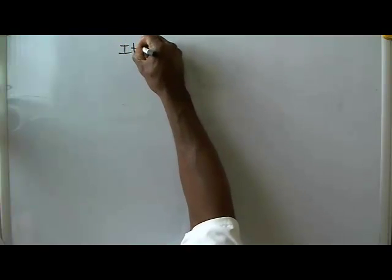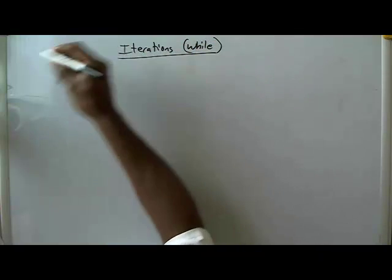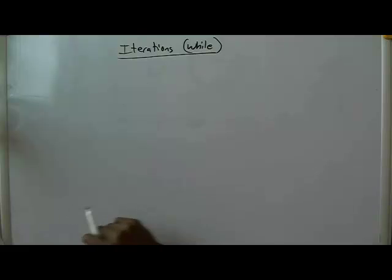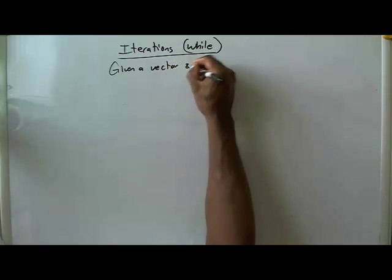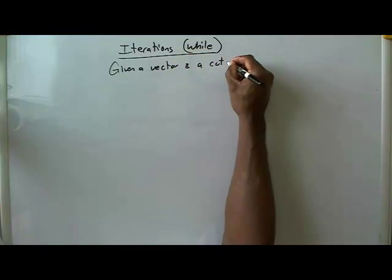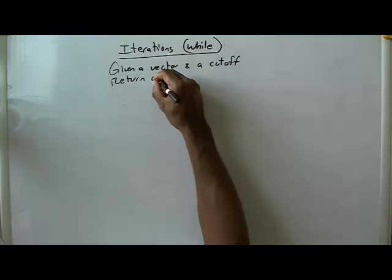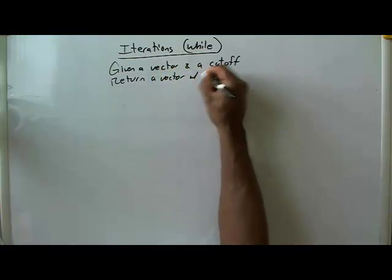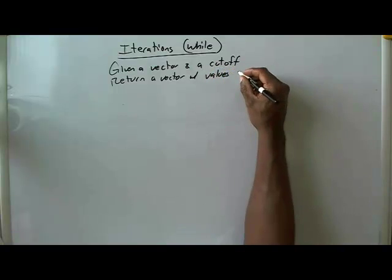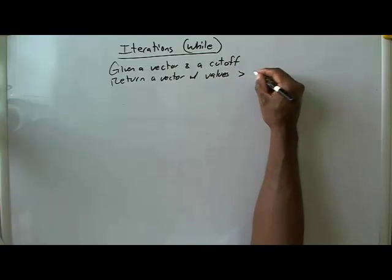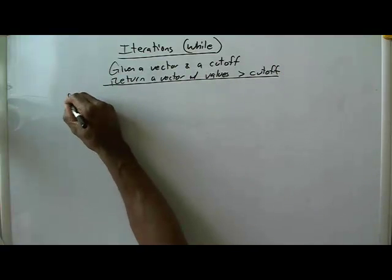This is our second example of doing iterations with a while loop. For this particular problem, we're given a vector and a cutoff value, and we're going to return a vector with all the values from the original vector that are greater than the cutoff value. We've done this problem before.